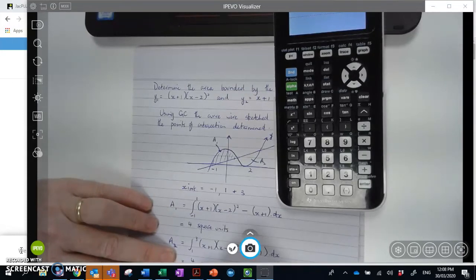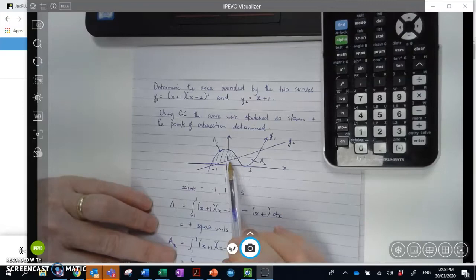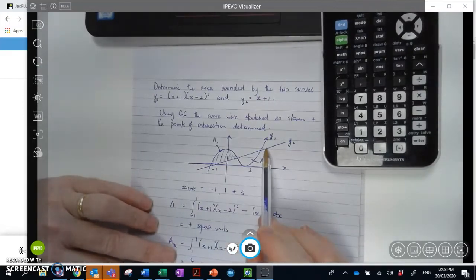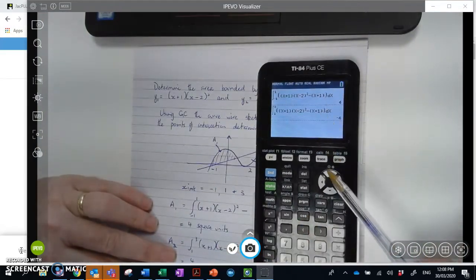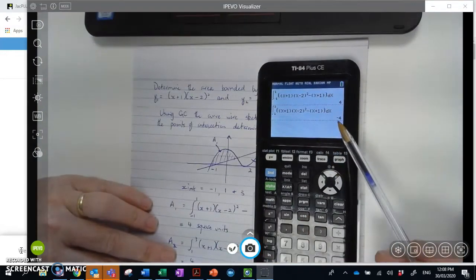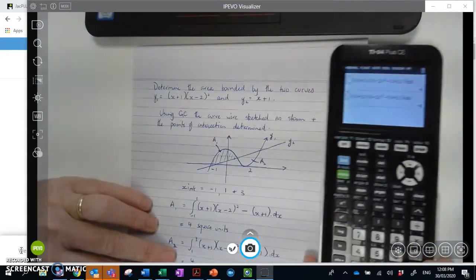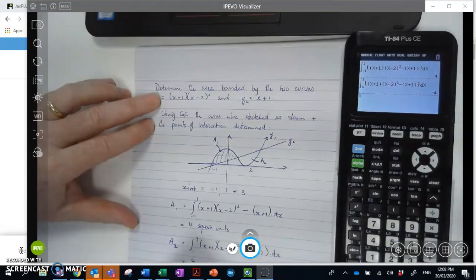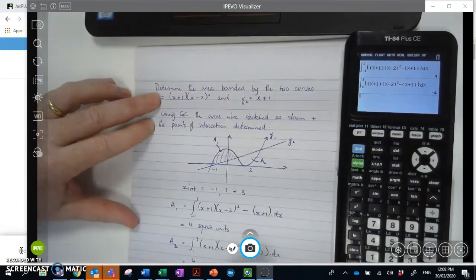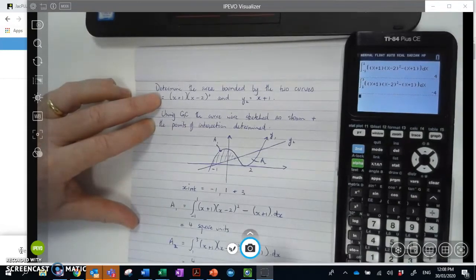Area 2 equals the same thing, this time from 1 to 3. And that's going to equal 4 square units as well. So I'm ignoring conveniently the fact that it's negative. I knew it was going to be negative because this time what was my lower curve is now on the top. And what was my upper curve is on the bottom. So I can expect that positive would have changed to a negative sign. What I didn't know was that it was going to be 4 as well, 4 units. And finally, I've got to determine the total area there. So therefore, total area equals 4 plus 4 or 8 units squared.